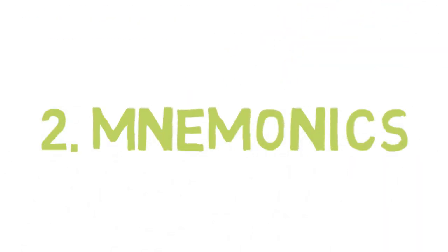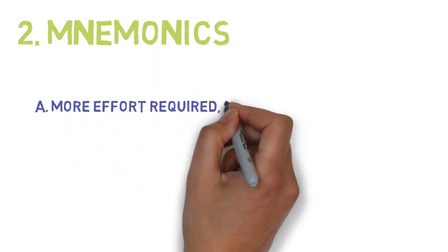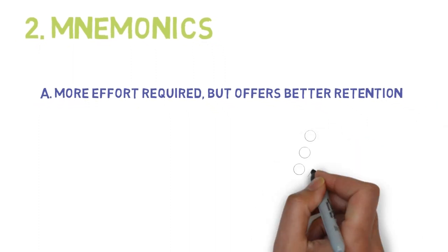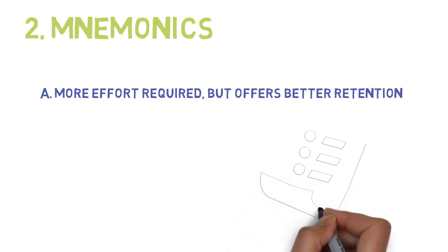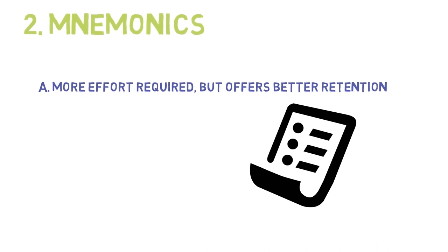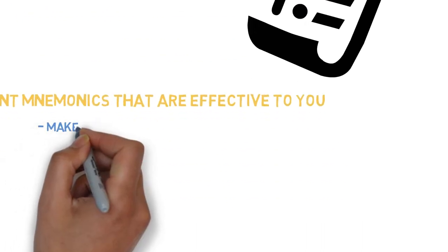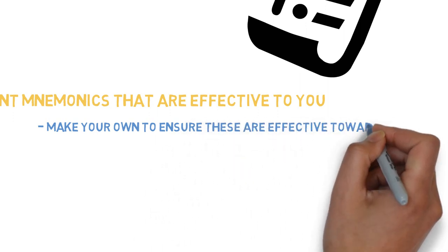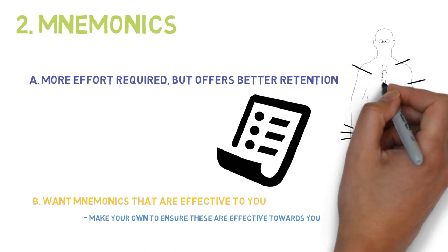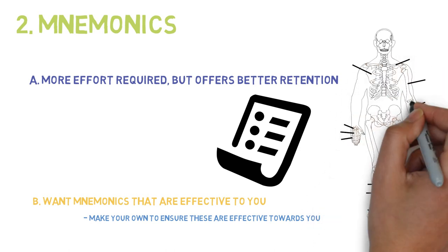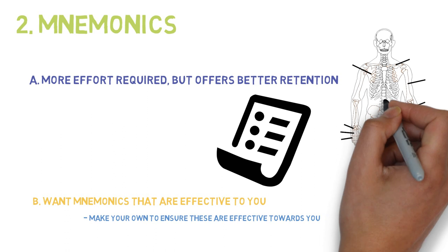Next are mnemonics. They require a bit more effort to create, but they offer better retention and recall for things like anatomy or lists. For example, if you're memorizing the branches of the external carotid artery, mnemonics are probably your best bet. Similarly, if you need to memorize a group of drugs under a certain class type, mnemonics will serve you well. You want to use mnemonics that are memorable and effective for you — this varies from person to person, so you often need to make your own. For certain concepts like anatomy, there are multiple mnemonics floating around that you can try out. I found that the inappropriate dirty ones are particularly obnoxious and therefore more memorable for me.